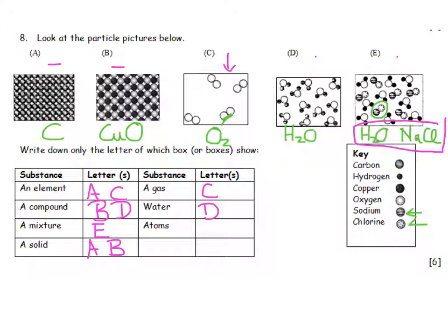And atoms all on their own. So this is an atom. This is little molecules. So if I want to see atoms all by themselves, just atoms, I'm going to be looking at just the carbon atoms over there, which is A.